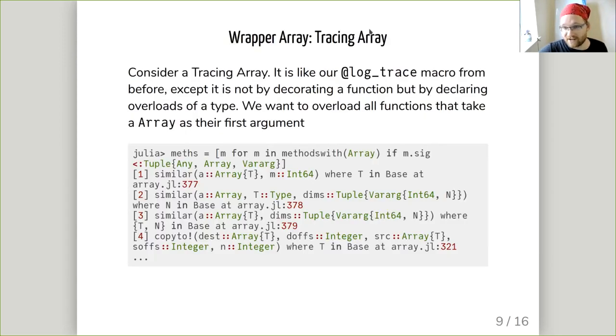Let's think about a wrapper array, which is going to be a tracing array. It's going to be like a log trace macro, except instead of us decorating the function where they're declared, we want to generate overloads of all the functions so that it will print them out whenever our wrapper array is passed into them. In particular, we'd like to generate a function for every function that takes a plain array at its first argument. We'd like to make a new one that takes our wrapper array instead and does this extra logging.